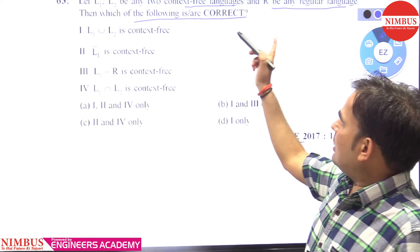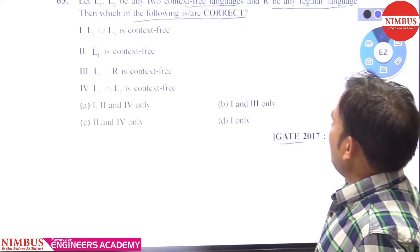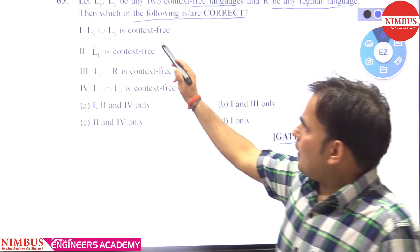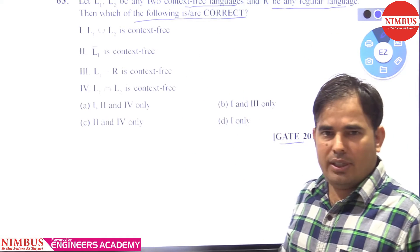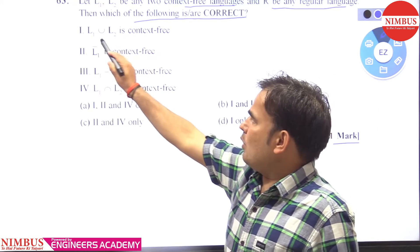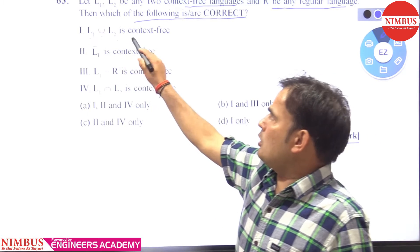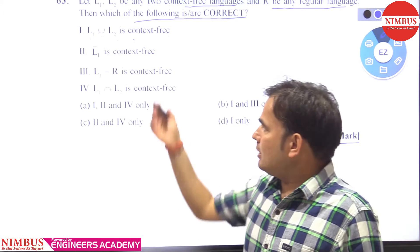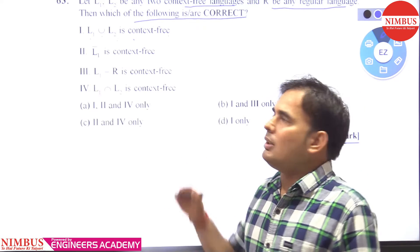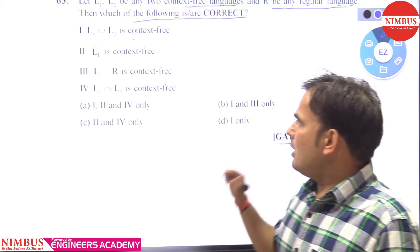So L1 is context free and R is regular language. If L1 and L2 both are context free, the first statement is saying L1 union L2 is context free. As we know that CFL are closed under union.